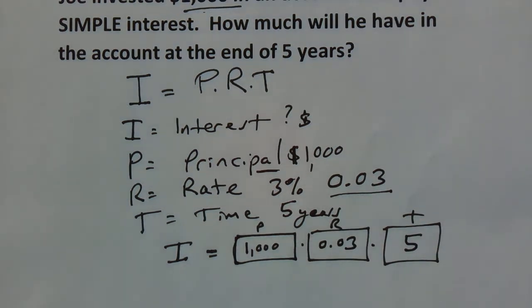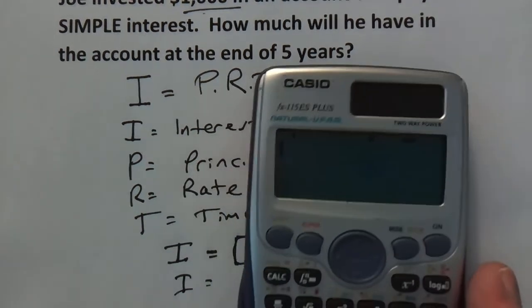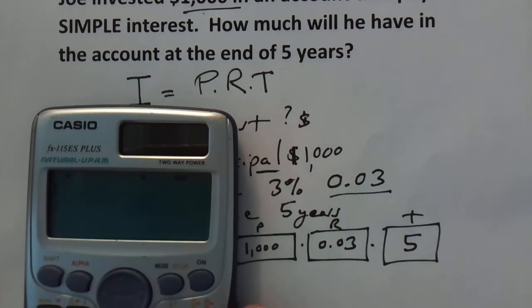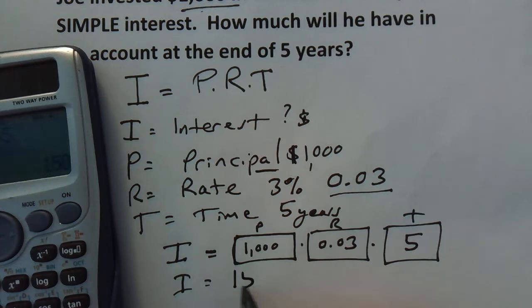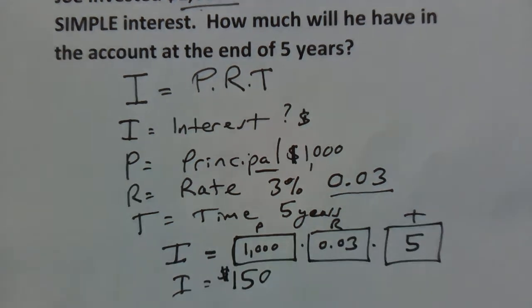So the first thing we need to do after we filled it all in is we're going to put that into our calculator. I like to use this calculator and we're going to go ahead and do the multiplication. So we have 1,000 and we're going to multiply it by .03 and we're going to multiply it by five and that gives us interest of $150. That's the amount of interest that's earned over that time period.